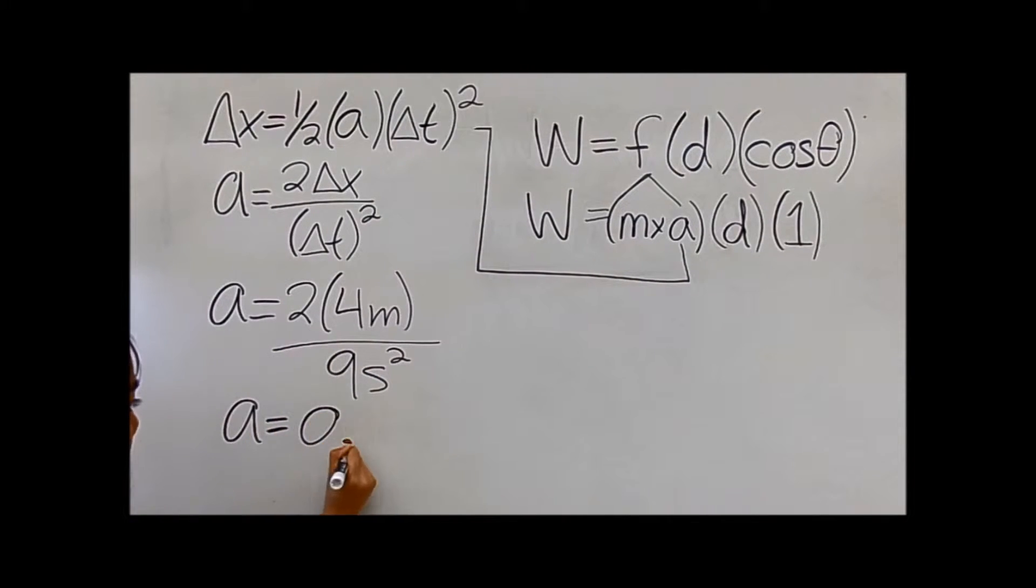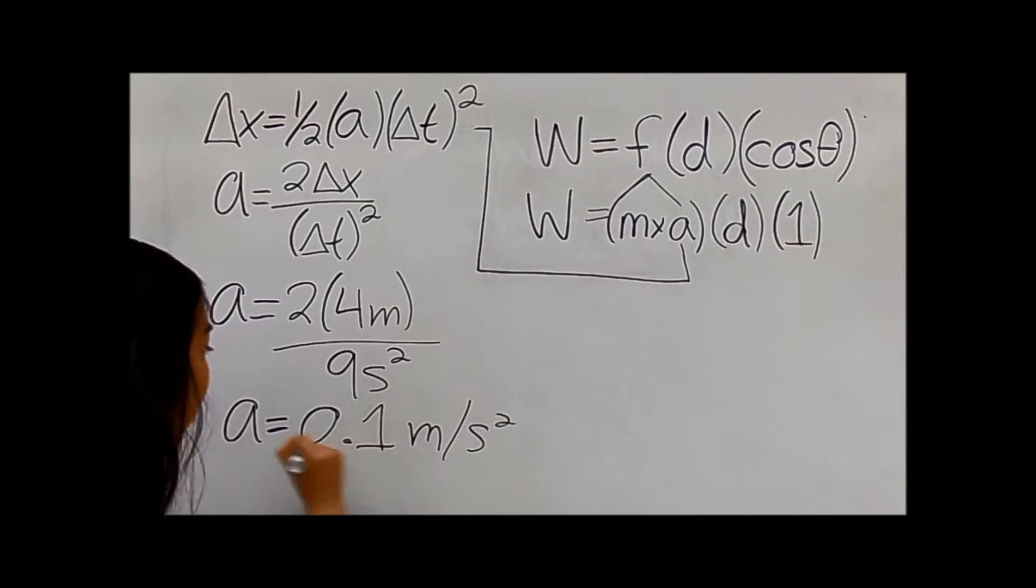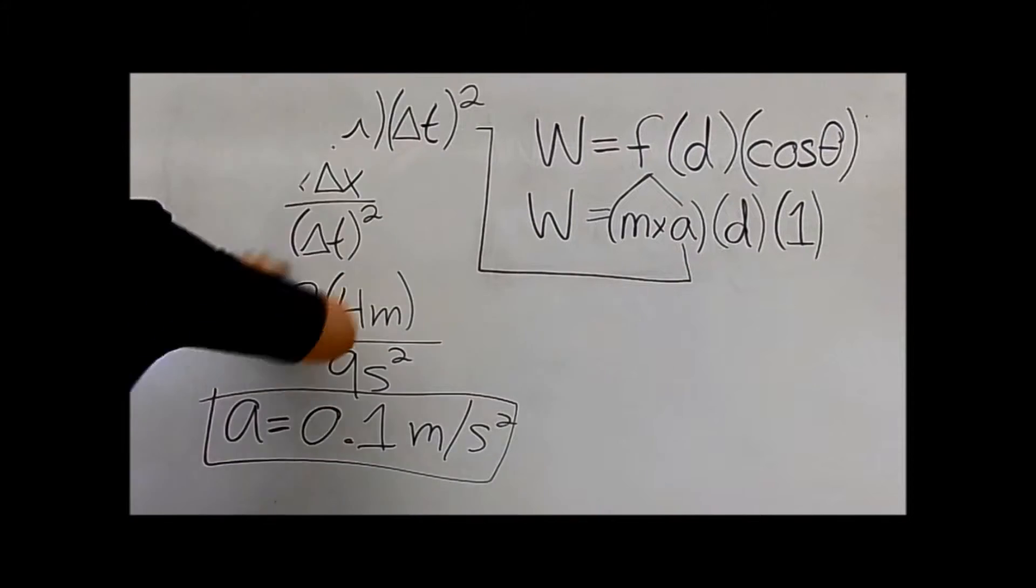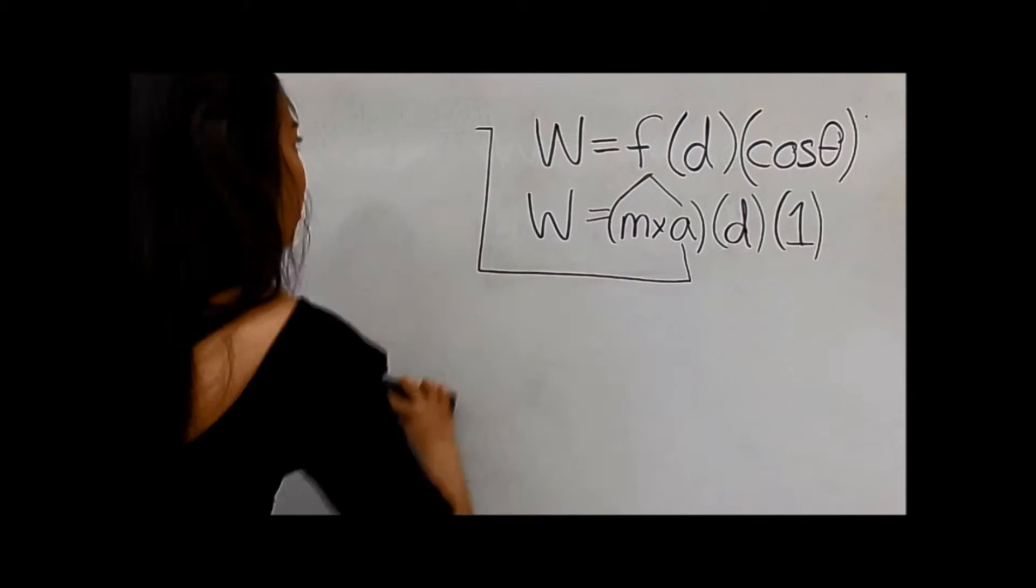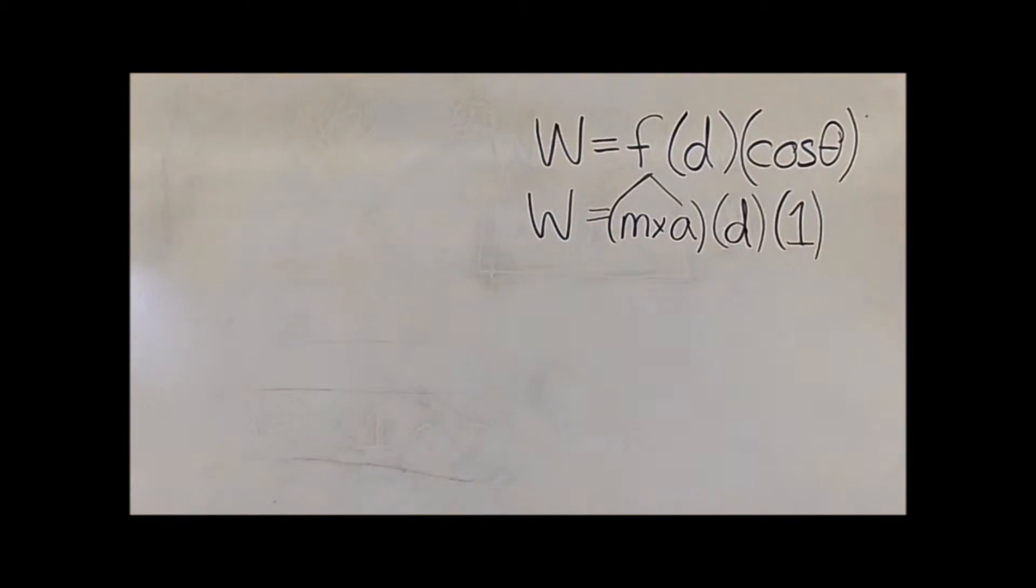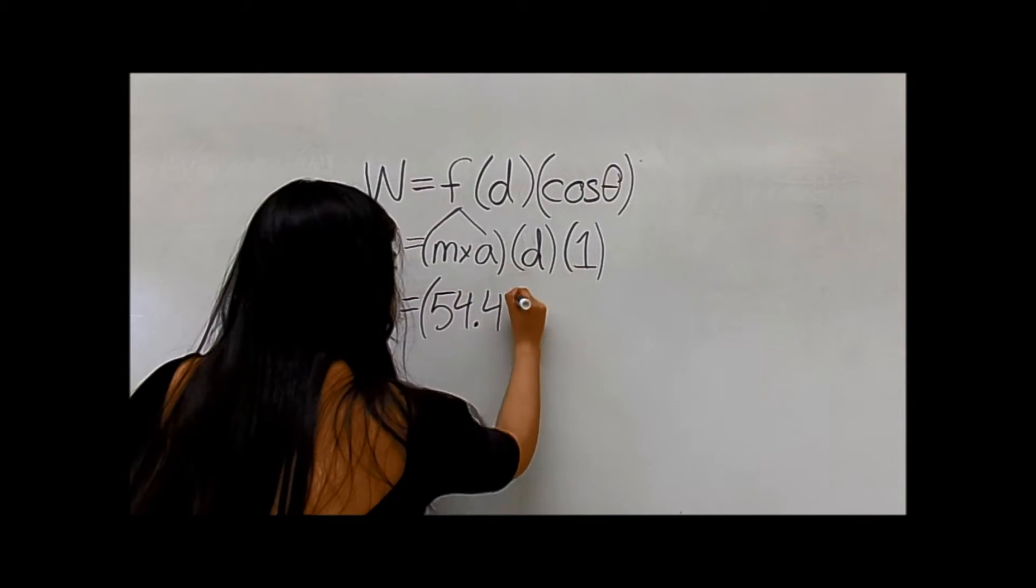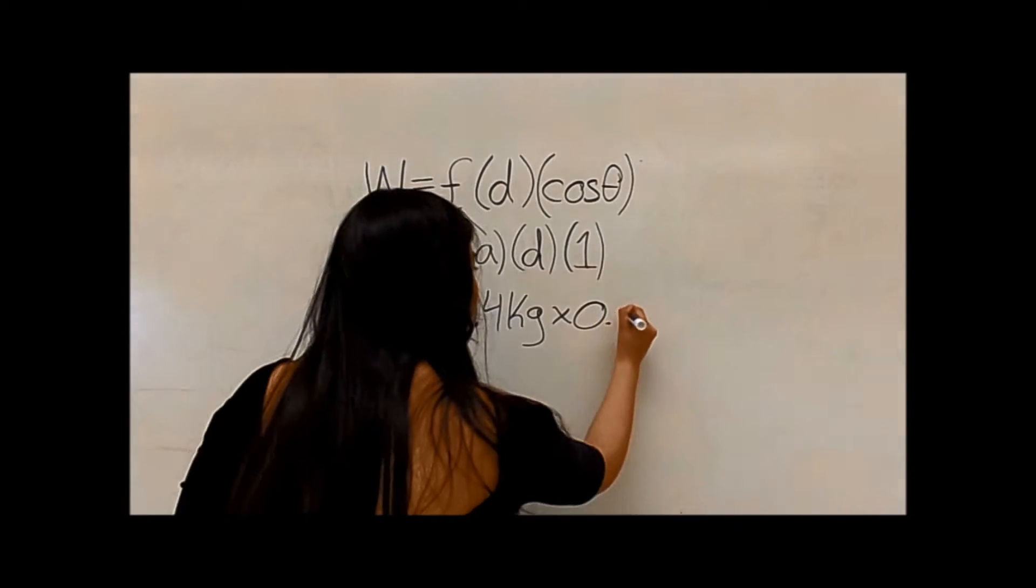Connor's acceleration is 0.1 meters per second squared. Connor weighs 54.4 kilograms. So now we have W = 54.4 kg × 0.1 m/s² × 4 m × 1.